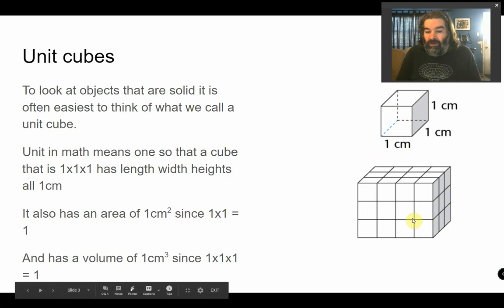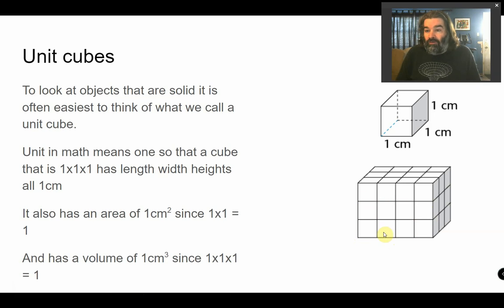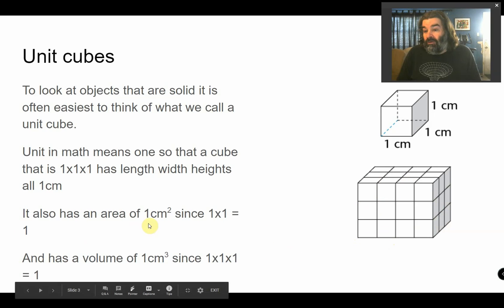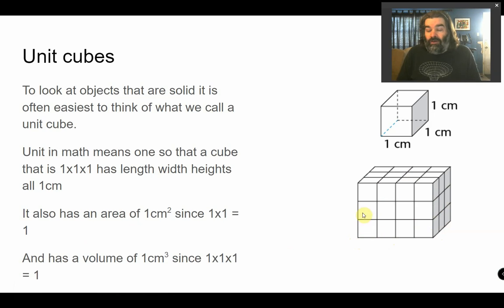So the nice thing about that is if I want to find area, I could just count the number of squares, and that would tell me the area of that face. If I want to know the volume, I could just count all the squares that make it up, and that would give me the volume. If I want to know the length, just one, two, three, four, the height, one, two, three. So it just makes it easier to see if we talk about a unit cube. By counting it, we can actually solve for everything we need to know.